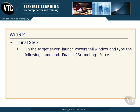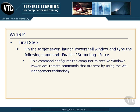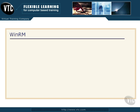Now the final step — and sometimes you'll need to do this and sometimes you won't. You may have to go to the target server, launch the PowerShell window, and type Enable-PSRemoting -Force. This will configure the computer to receive Windows PowerShell remote commands that are sent using the WS-Management technology. If you run this and you didn't need to, it will simply tell you that it's already enabled.